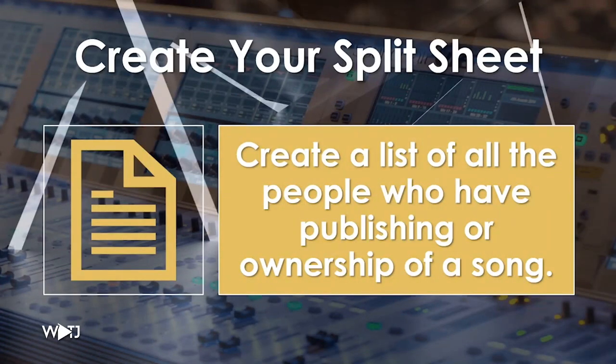The next tip is to create a split sheet. A split sheet is basically a list of all the people who have recording ownership or publishing of a song — those who helped write the song, the composer of the music, and the person who wrote the lyrics. When you're licensing music you can get two different payments: one payment for the master recording, which can be $500 minimum, and another payment for the publishing owner — the songwriters — which is another $500 minimum. Licensing can be very lucrative if you own all of the music and the master recording.